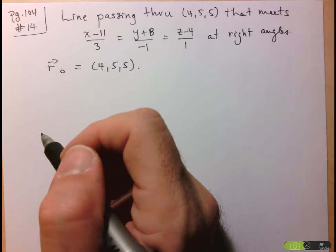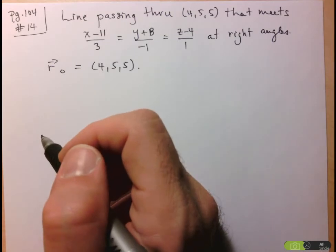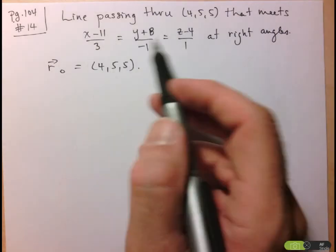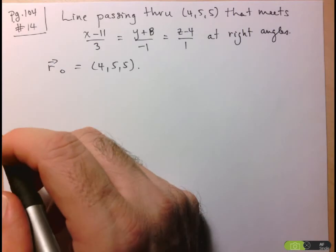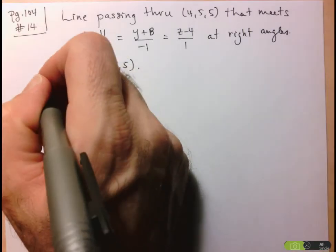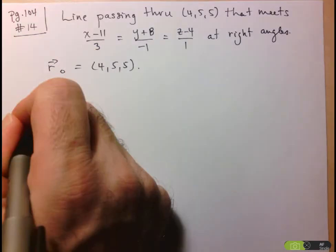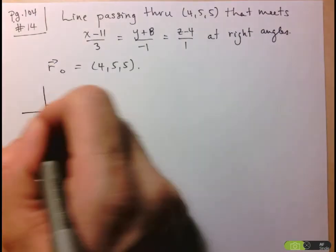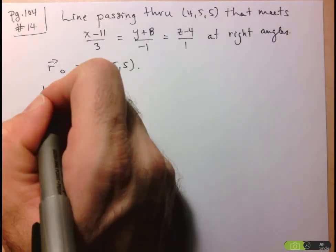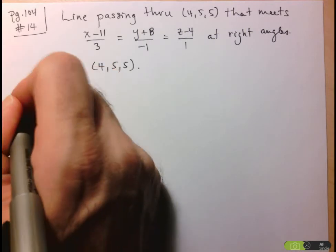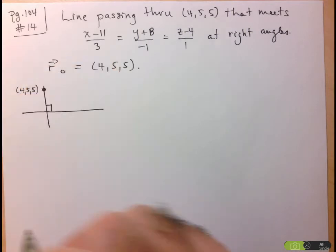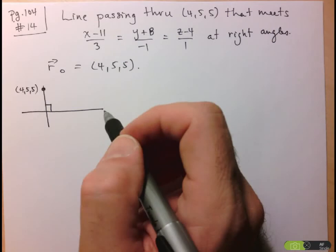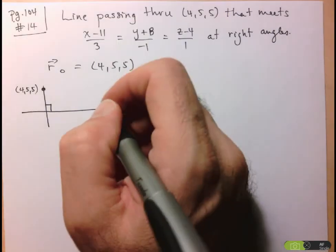Now we have to find the direction vector of the line we're looking for. I know it meets the given line at right angles — that's really all the information I have. I'm going to start by drawing a diagram. The lines meet at a right angle; the one I'm looking for contains (4,5,5), and I'm given the equation of the other line in symmetric form, which I'll convert to vector form.